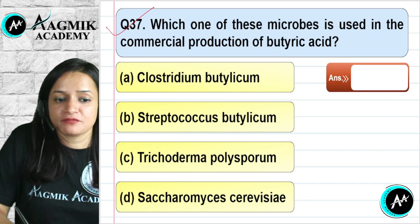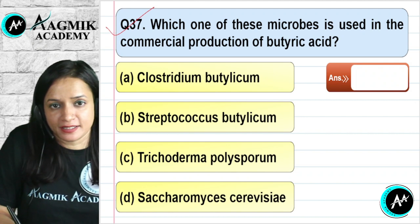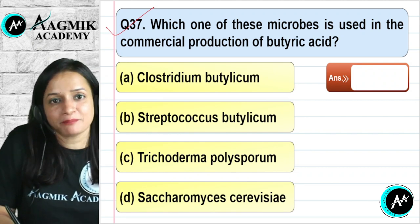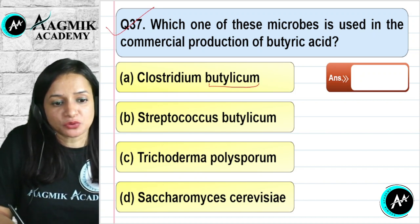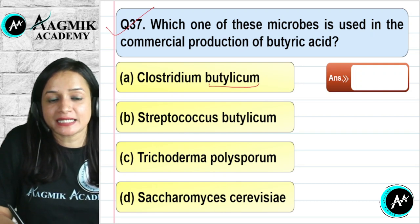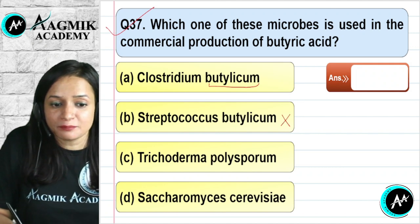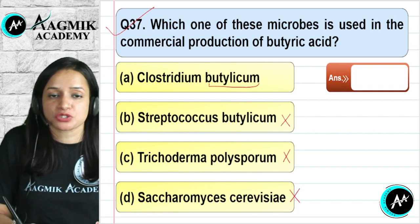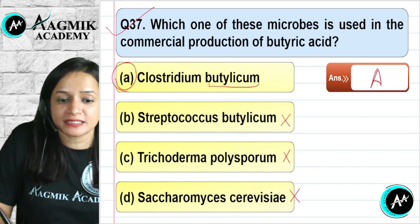Question number 37: Which microbe is used in the commercial production of butyric acid? Clostridium butylicum bacteria are used — the species name 'butylicum' makes it clear. Streptococcus butylicum does not exist in this context. Trichoderma is a fungus, and Saccharomyces cerevisiae is a yeast — neither is used for butyric acid production. The correct option is A.